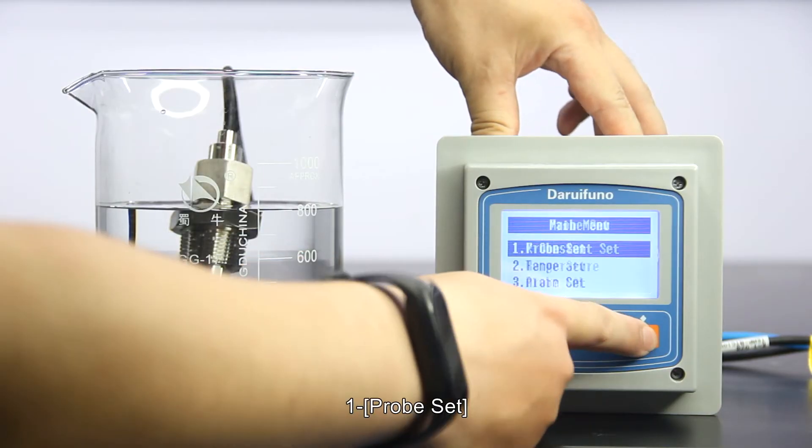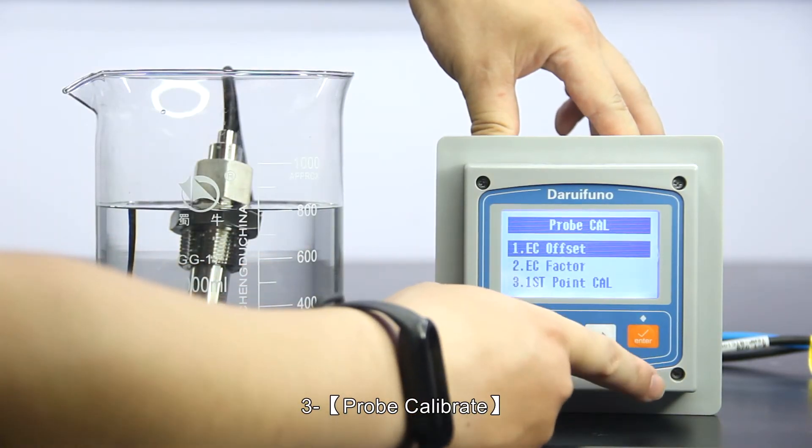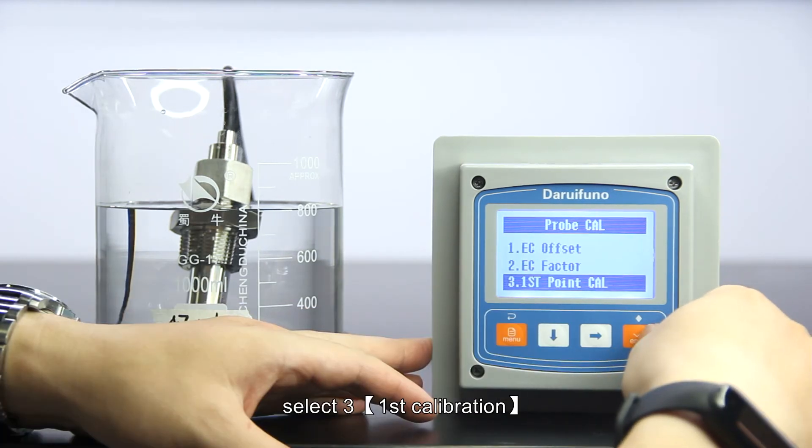Long press the menu key to enter. Select probe set, then probe calibrate. After entering, select first calibration.